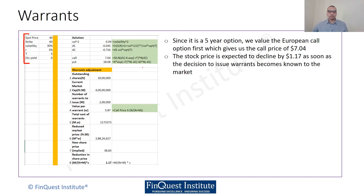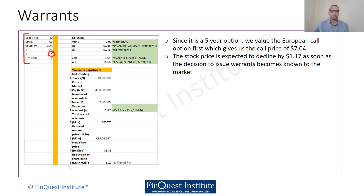To solve these numbers we have done a small working here. On the exam it may be asked: if the company decides to issue a warrant, how much do you expect the stock price to decline by? We have assumed a five-year option because we have been given T of five years. We calculate the value of call and put options, focusing on the call option for now. After plugging the numbers into the Black-Scholes formula we get the call price to be around seven dollars.